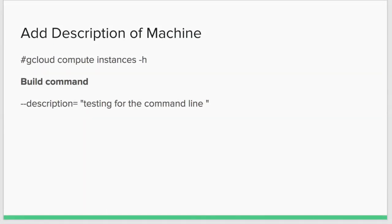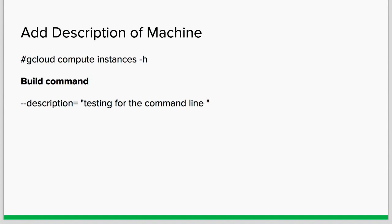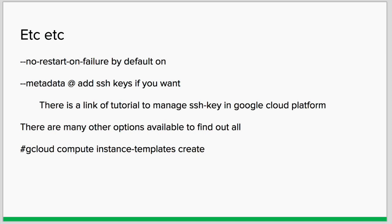Next we set the description for the machine — here we've set it to 'testing of a command line'. You can set the description according to your environment or need. There are many other options available as well, such as no-restart-on-failure, which is on by default but can be set off. Another option is metadata, where you can set your SSH key which can be used for login purposes.